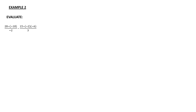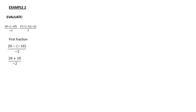Example number two: evaluate 28 minus (negative 18 divided by negative 2), minus [negative 2 times negative 6] divided by negative 3. It is easier to handle the two fractions separately. For the first fraction: 28 minus bracket negative 18 divided by negative 2 end bracket. Negative times negative is positive, so this becomes 28 plus 18 divided by negative 2. That is 46 divided by negative 2, which gives negative 23.